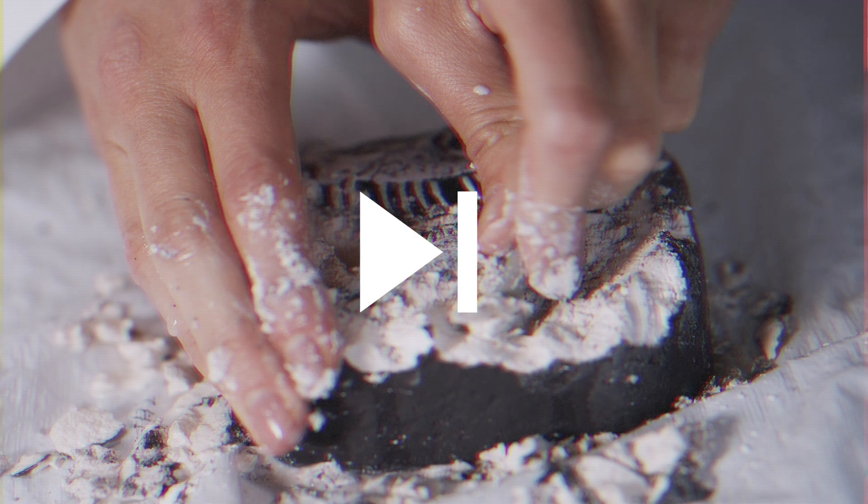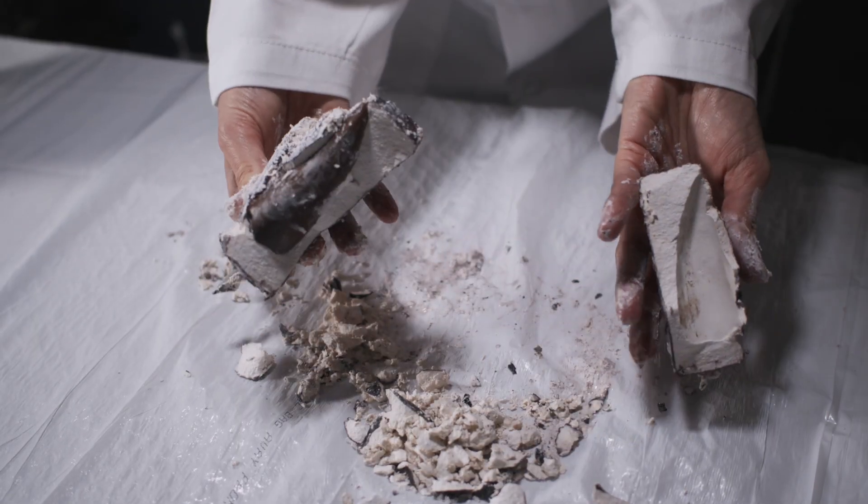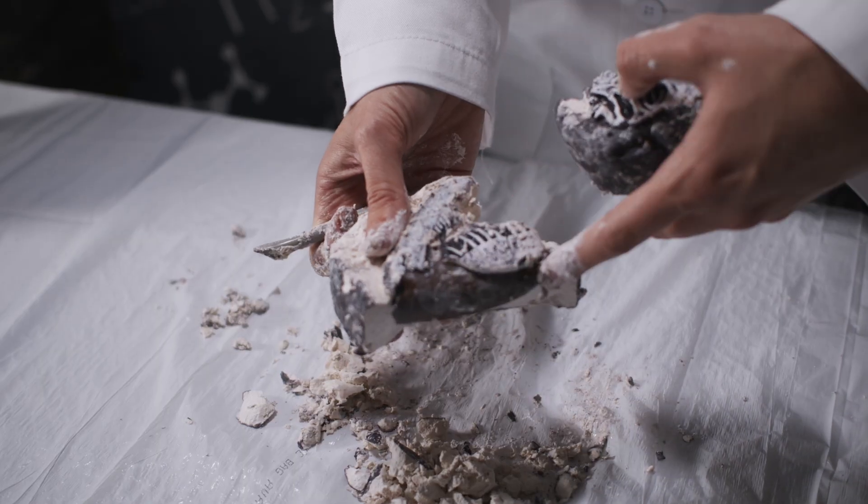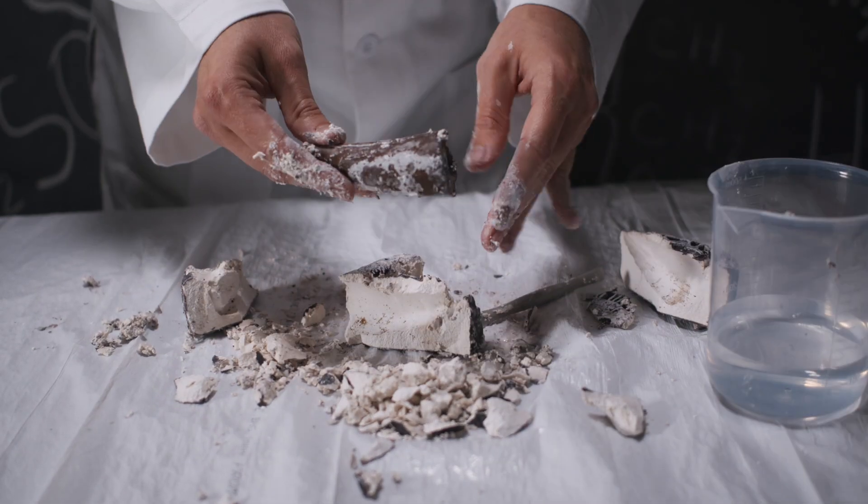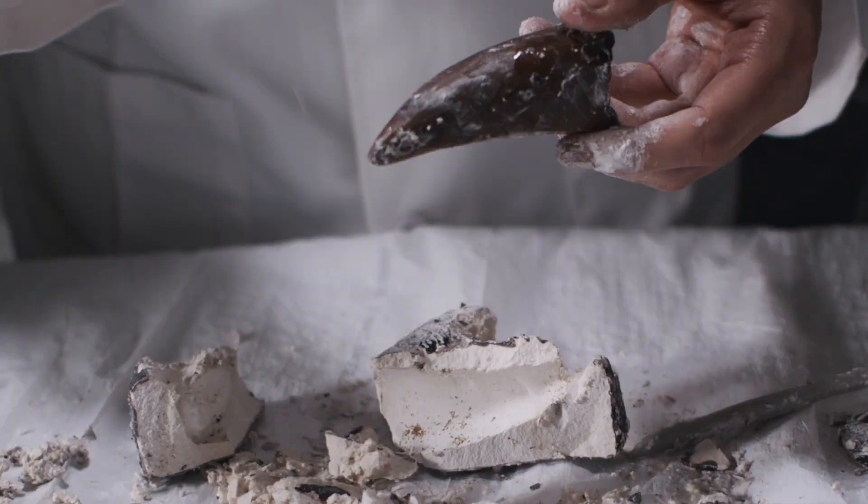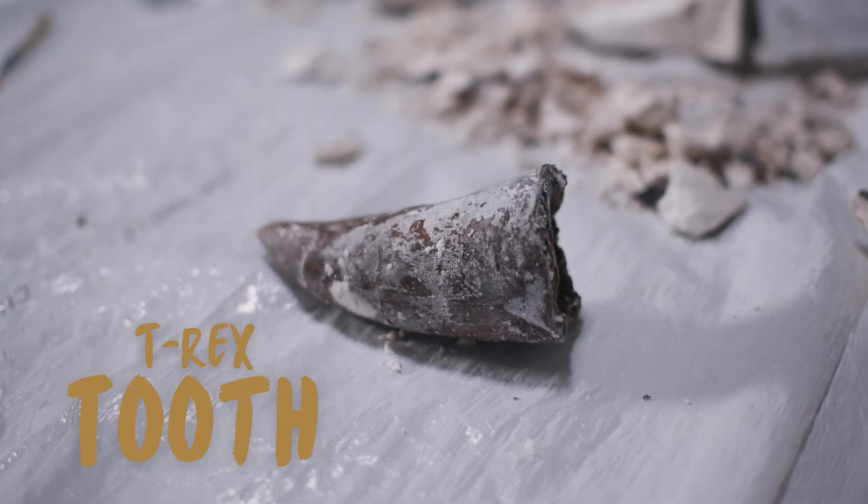Okay, let's get to the good part. Now wait a minute. What could this be? Wow, it's humongous. And it looks awfully sharp. What do you think it is, explorers? That's right. It's a Tyrannosaurus rex tooth.